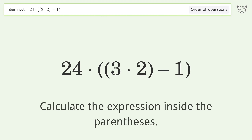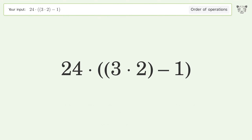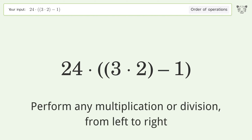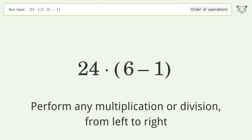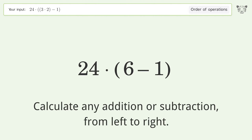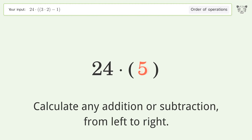First, calculate the expression inside the parentheses. Perform any multiplication or division from left to right: three times two equals six. Then, calculate any addition or subtraction from left to right: six minus one equals five.